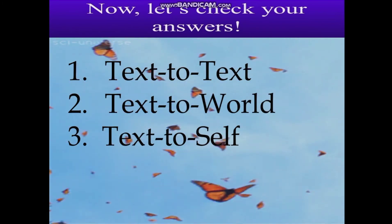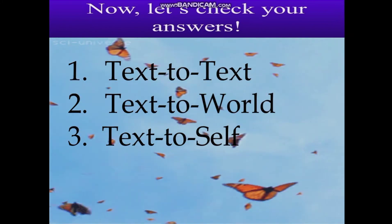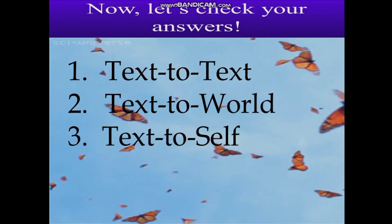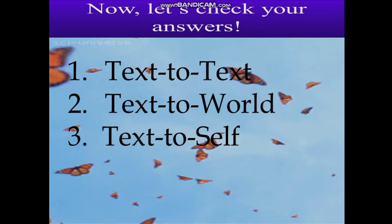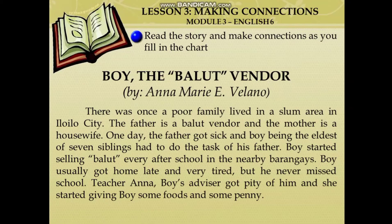Very good! You fully understand the three different types of connections. Again: text-to-text, text-to-self, and text-to-world. Read the story and make connections as you fill in the chart. The title of the story is 'Boy – The Balut Vendor' by Anna Marie E. Villano.